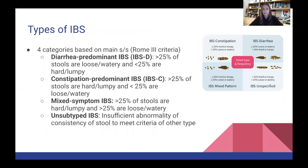There are four types based on main signs and symptoms. IBS-D is diarrhea predominant, where greater than 25% of stools are loose and watery and less than 25% are hard or lumpy. IBS-C is constipation predominant, where 25% of stools are hard and lumpy and less than 25% are loose and watery. Mixed IBS-M is when greater than 25% are hard and lumpy and greater than 25% are also loose and watery. Unsubtyped IBS is when there's an insufficient consistency of stool to meet any of the other three criteria.